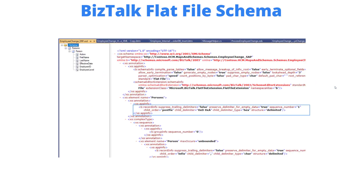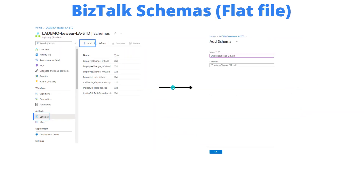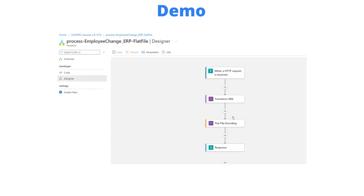We're going to do the same thing for a flat file schema. I used the flat file schema wizard and built out a schema based on a sample file, without any changes — as-is. We've got the XSD. We'll add it similarly to how we did with maps, except we need to click on the schemas area first, then add the schema. No renaming required — it just goes in. Once we have those artifacts in our VS Code folder or inside the Azure portal, we can go ahead and build out a Logic App that uses these specific functionalities.